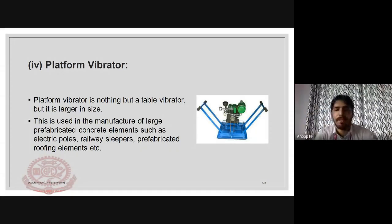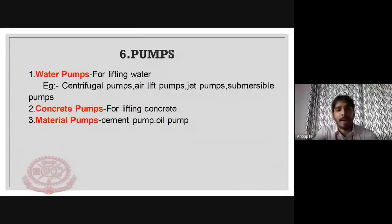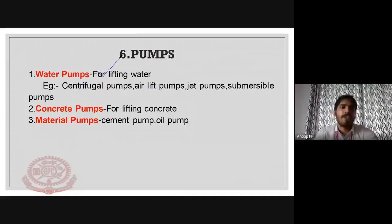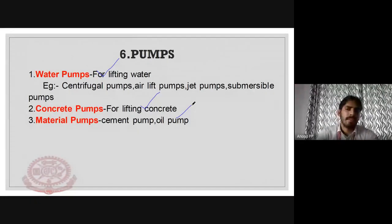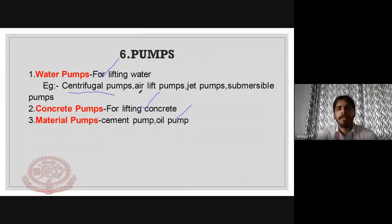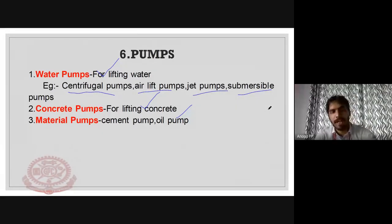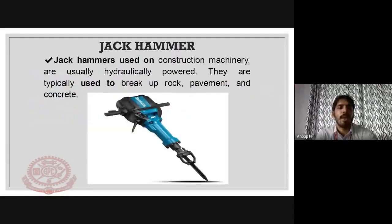Pumps used in construction can be categorized into three types: water pumps, concrete pumps, and material pumps. If the pump is used for lifting water it is a water pump; for concrete it is a concrete pump; for other materials like cement or oil it is a material pump. Types of water pumps include jet pumps and submersible pumps.